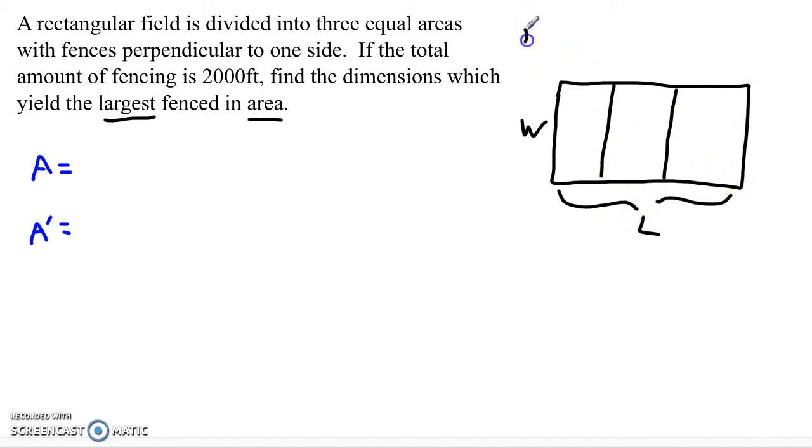So the perimeter of this fence, in other words, the total amount of fence that I use, is going to be one, two, three, four Ws plus two Ls. The L across the top, the L across the bottom. That's going to be important in a moment.